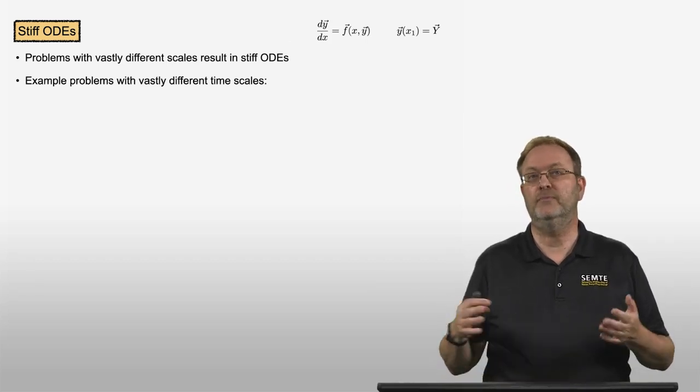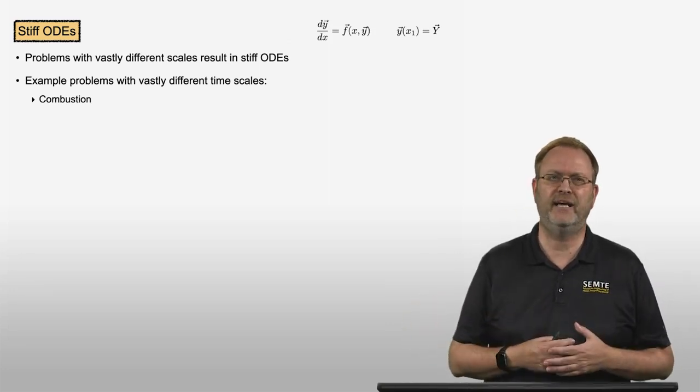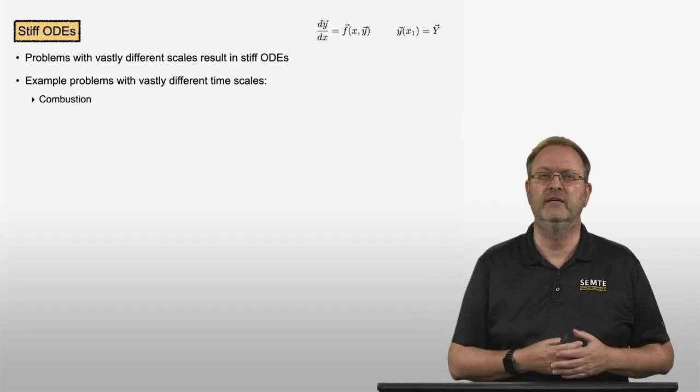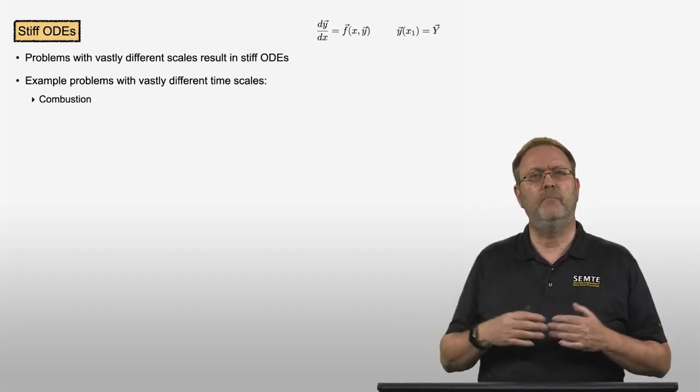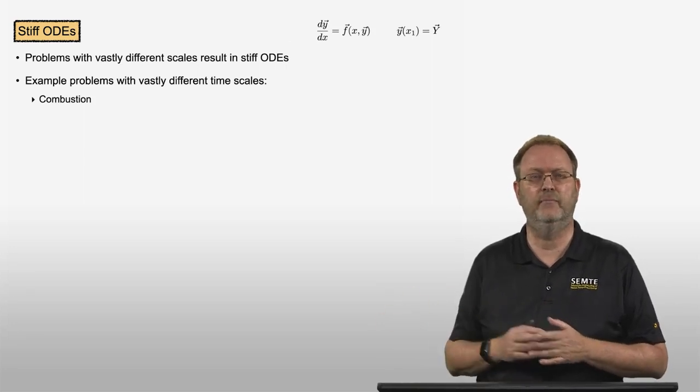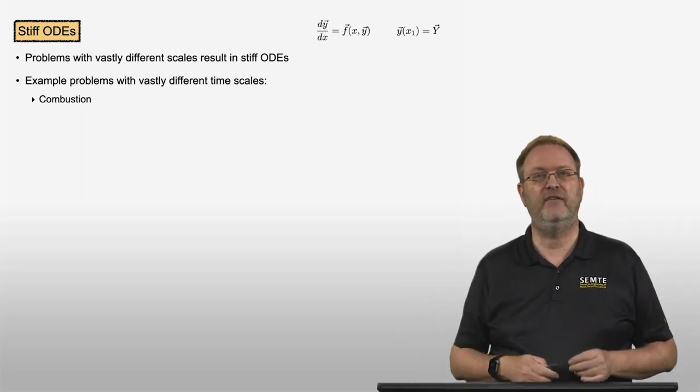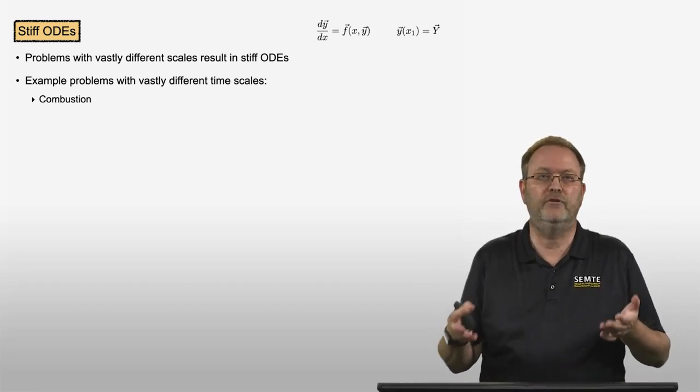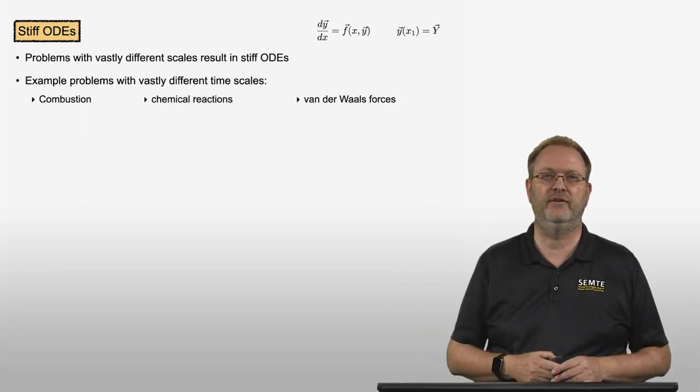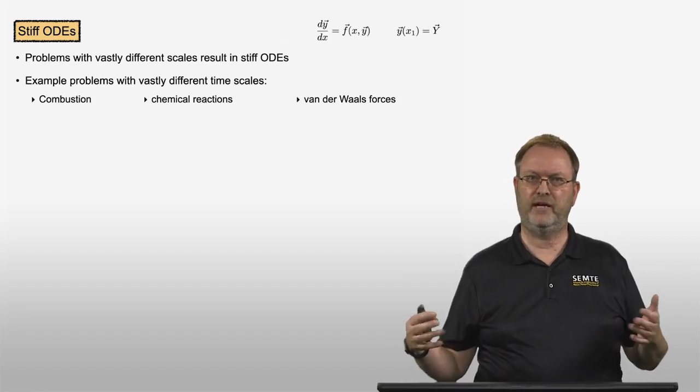And examples for those systems with vastly different timescales are, for example, combustion processes. What are the different timescales? We have some chemical reactions that involve radicals that occur on very short timescales that are very fast, but then there are other reactions that are comparatively relatively slow. For example, the generation of soot takes a comparatively long time. So in one system of ODEs, we have processes that are very quick and processes that are very slow. But our numerical method has to be able to deal with both the very quick processes and the very slow processes. Chemical reactions in general are another example, or van der Waals forces between molecules. Those happen on very, very quick and small scales.